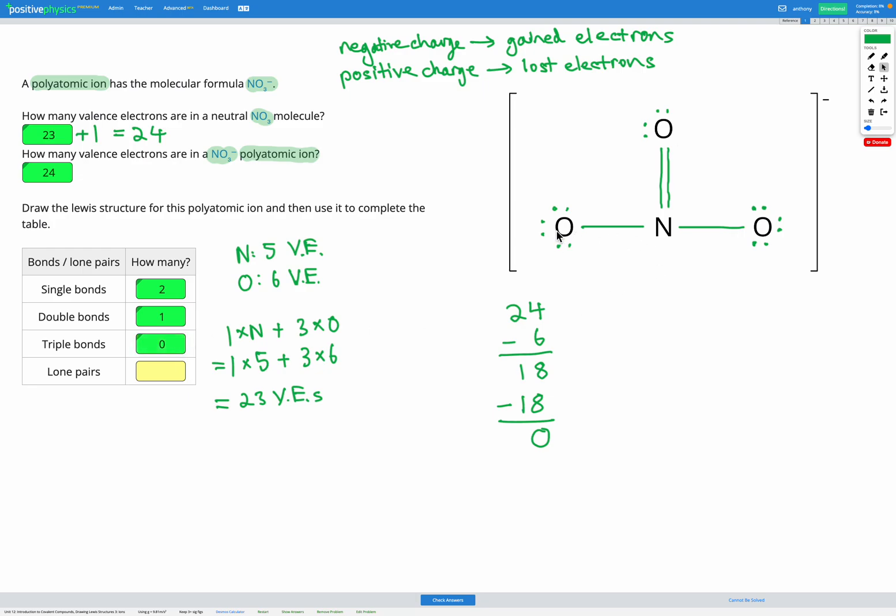And for lone pairs we have 1, 2, 3, 4, 5, 6, 7, 8 lone pairs.